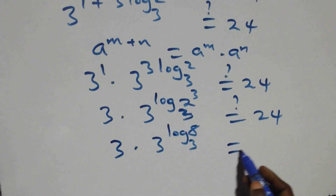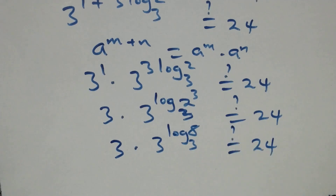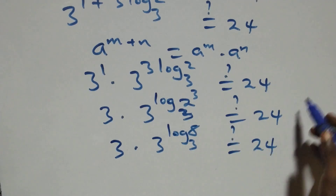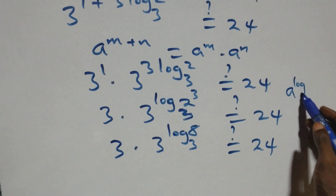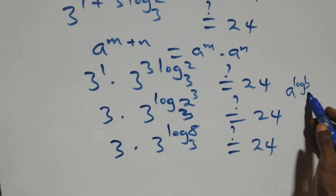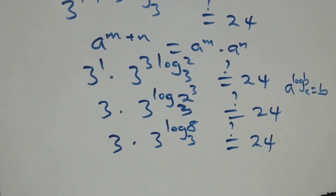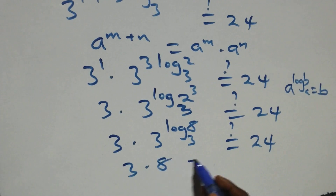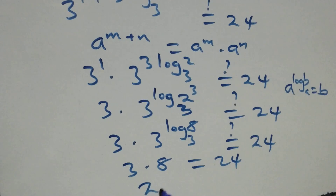We have three times three raised to the power log of eight base three, equals twenty-four on this side. This follows from the identity: a raised to the power log b to base a equals b. So three raised to the power log eight base three equals eight. Therefore, three times eight equals twenty-four, and twenty-four equals twenty-four.